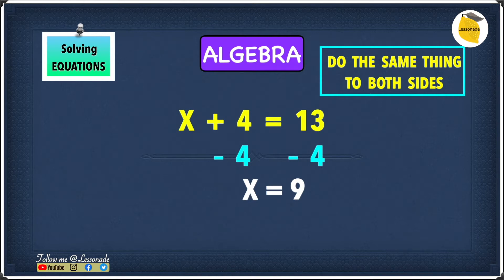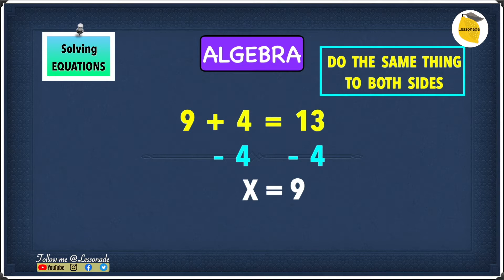A way of checking if your answer is right is by substituting your answer back into the question. We have x equals 9, so we substitute 9 in place of x. That gives us 9 plus 4 equals 13, which is true — confirming that x equals 9 is correct.